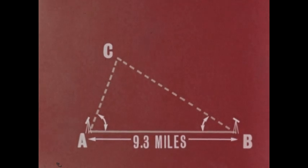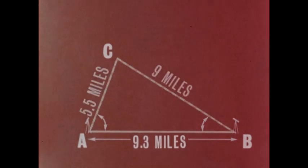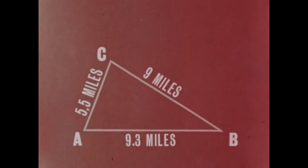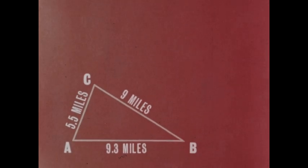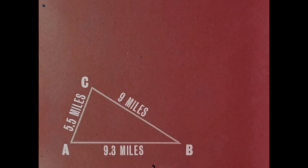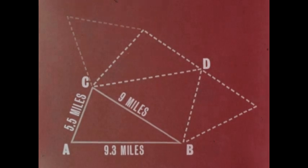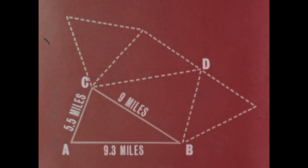Now knowing the length of one side of a triangle and the two adjacent angles, the distances to point C can be precisely calculated. This method is called triangulation, and each side of the triangle formed by these three points can now be used as a base to locate still more points. Triangulation can be repeated until the area to be mapped is dotted with control points, that is, points whose horizontal location relative to one another are accurately known.